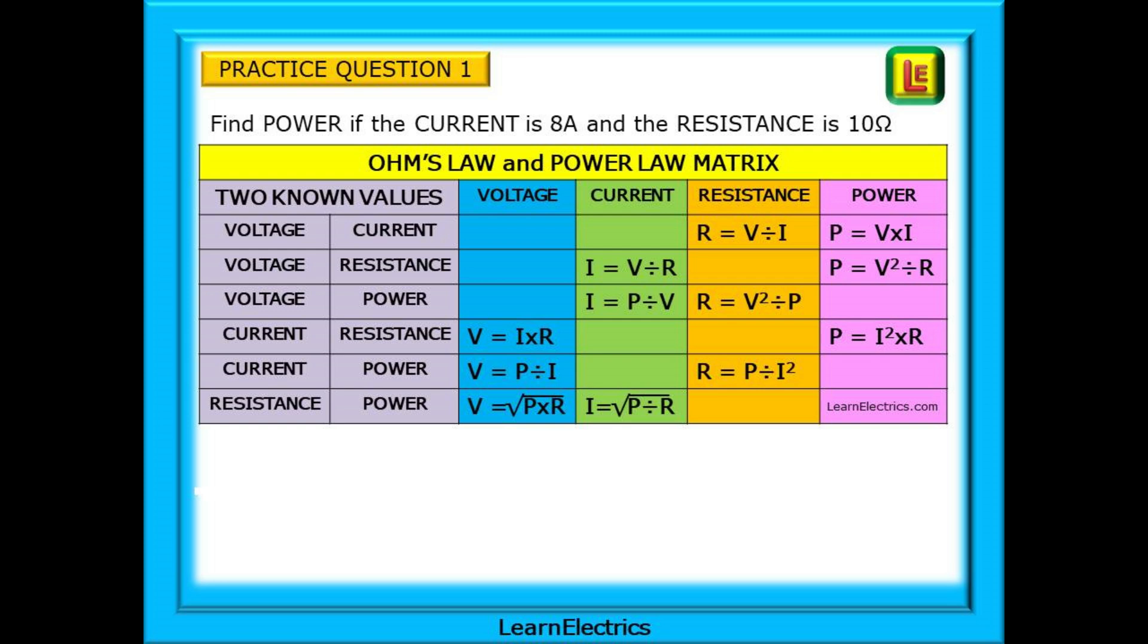The two known values are current and resistance. The matrix shows that we can calculate voltage and power with this information. It is the power that we want, so choose the appropriate calculation and find the answer. Pause the video and complete the calculation. The answer and the calculation are shown below the matrix. If you didn't get 640 watts, then pause the video and look at how we arrived at the answer.